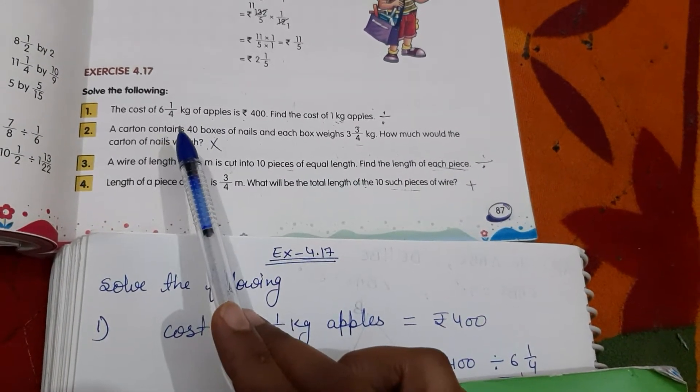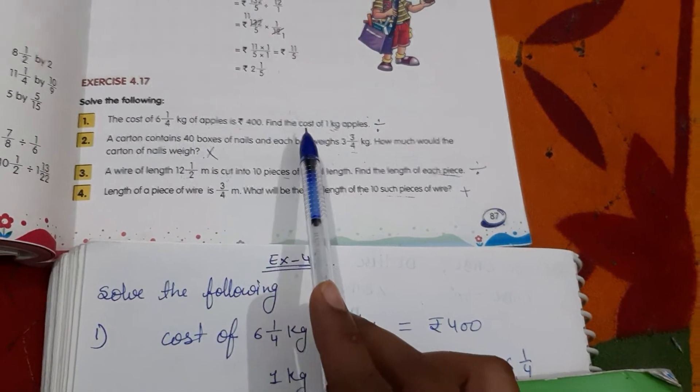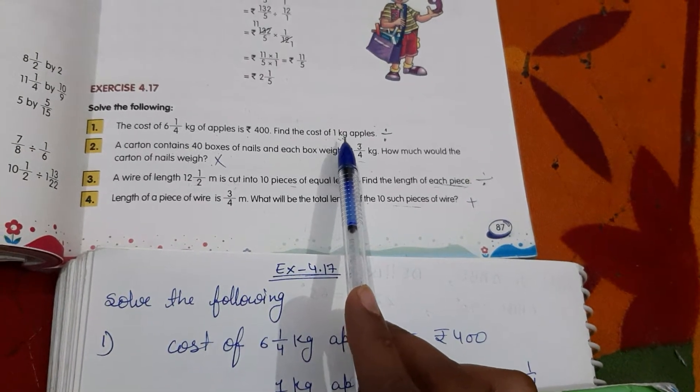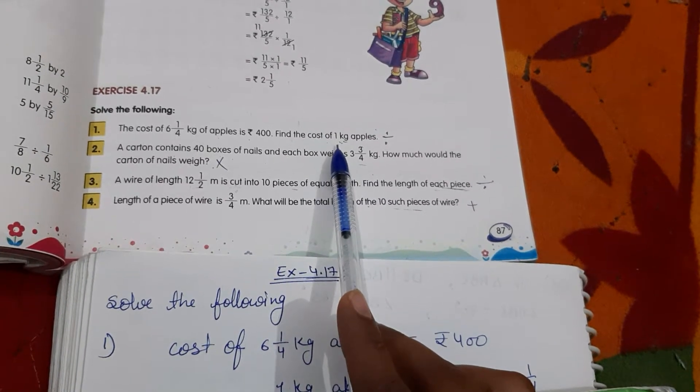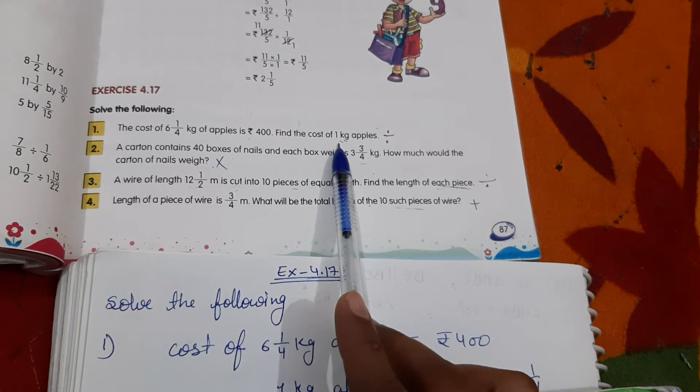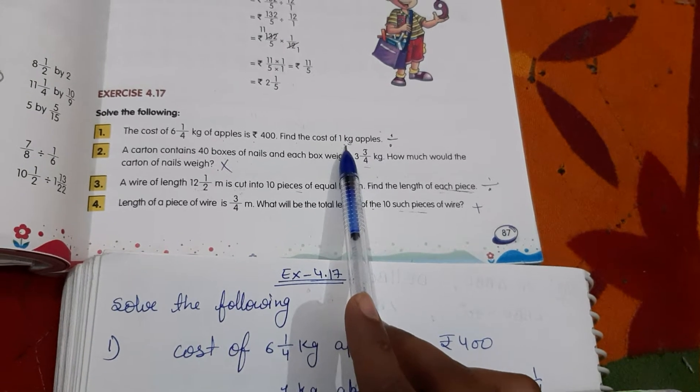So here these are the word problems and identify what operation we have to take. The cost of 6 1 by 4 kg of apples is Rs 400. Find the cost of 1 kg. Here we are finding cost of 1 kg. So what can you do? If they are asking related to 1 kg in question, then we have to divide it. Remember always.